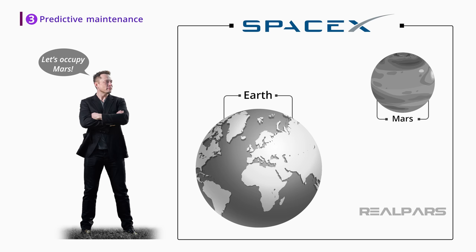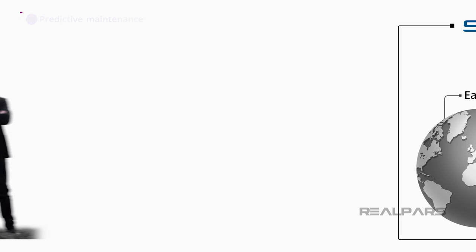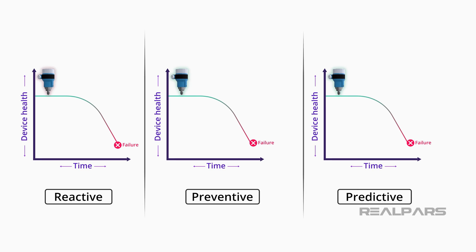Ok, enough of crazy futuristic ideas, let's get back to the present time. In summary, we have three types of maintenance: reactive, preventive, and predictive. Reactive maintenance is when you wait until the device fails and then you fix it. This causes your production line to stop and results in financial losses.